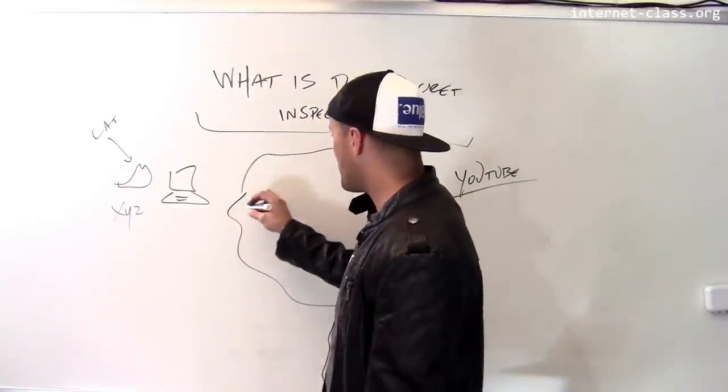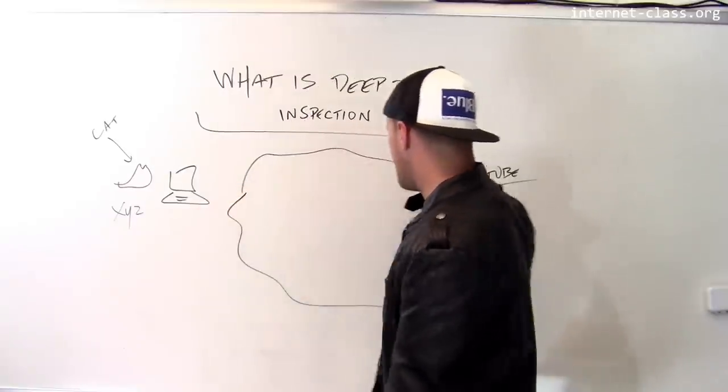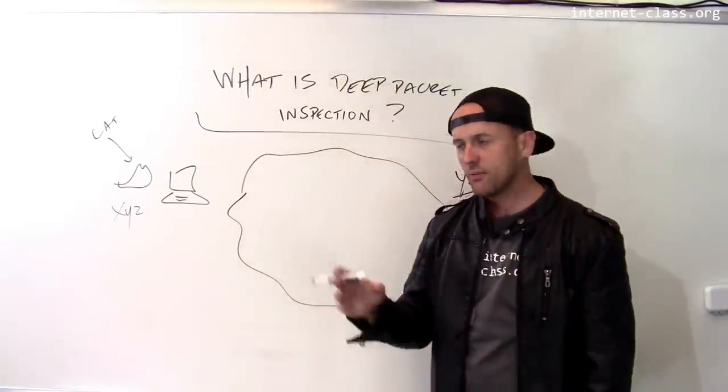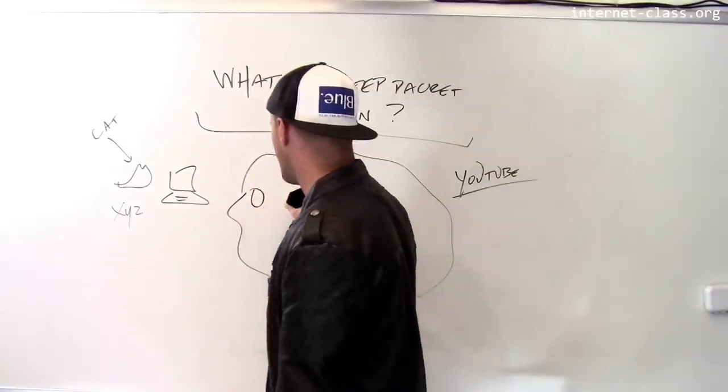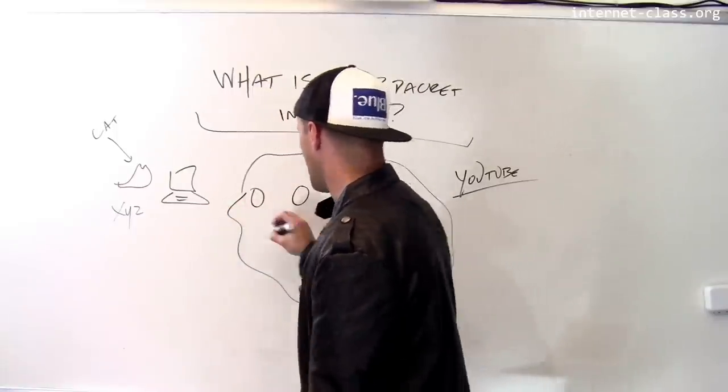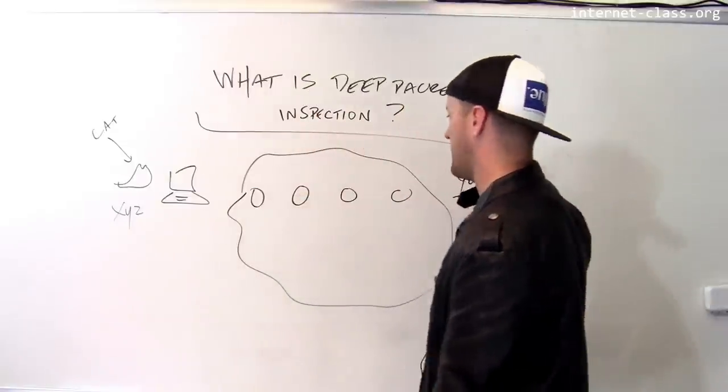So in theory, the traffic being sent back and forth between her computer and YouTube - the routers that are part of the core internet are only supposed to be looking at the destination address. So she sends a request, I look at the destination, I forward it on, forward it on.